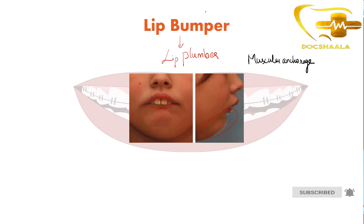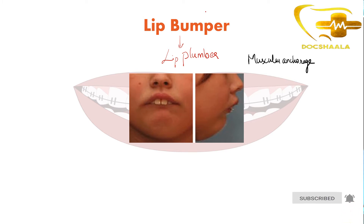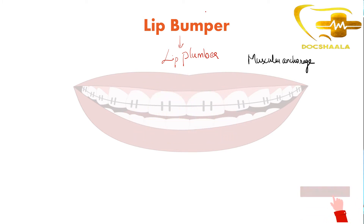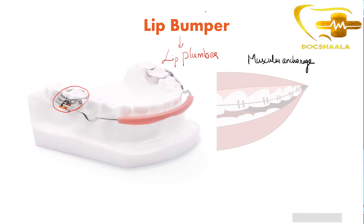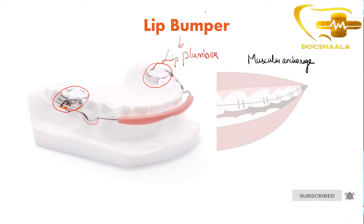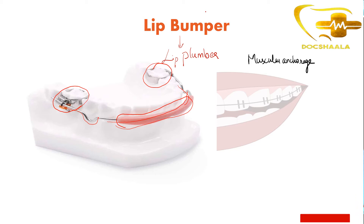Let us see how the appliance actually looks like. This is how the appliance actually looks like. You can appreciate here that the appliance is having a band on molars. These two molars are having molar bands and they are both attached with a long loop of wire. This wire is having an acrylic component in the anterior end. So these are the components of the lip bumper.